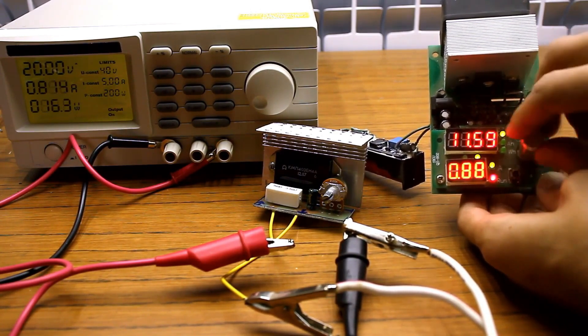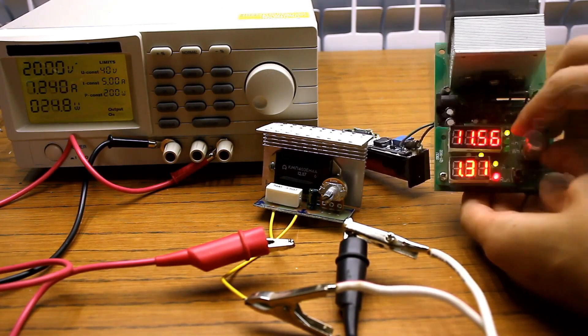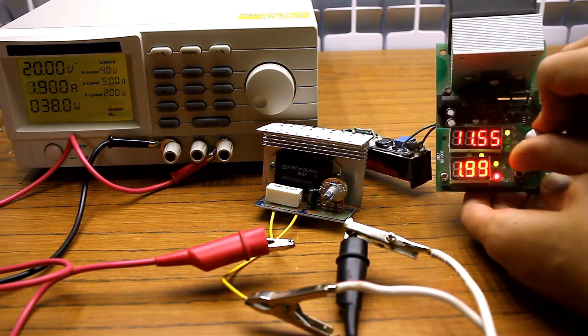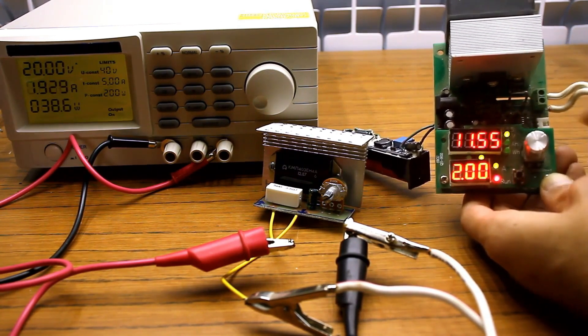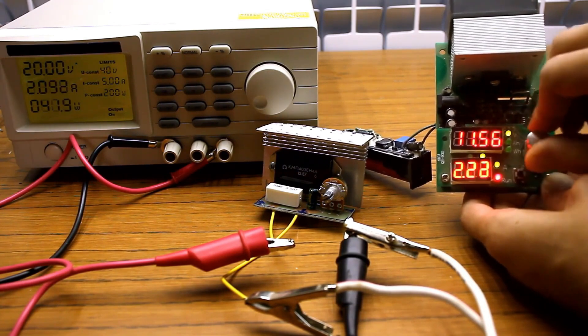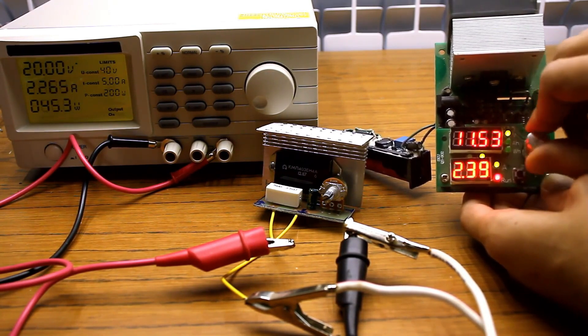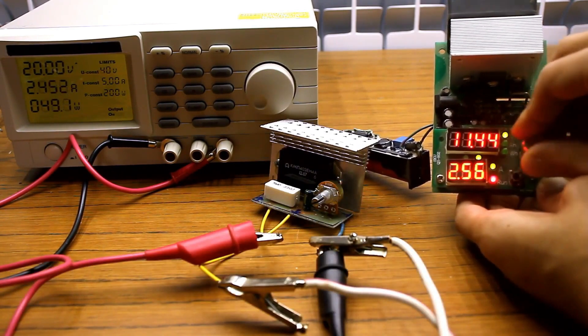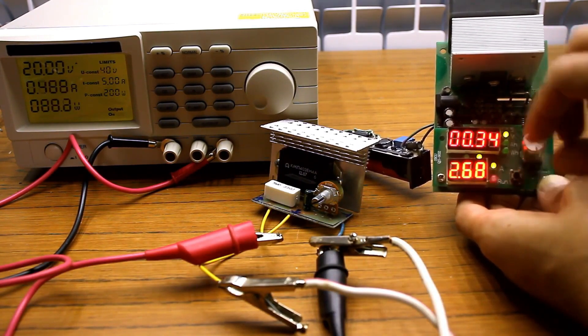We will apply 20 volts to the input and slowly load the output of the stabilizer. At a current of 1 ampere, everything is fine. At a current of 1.5 amps, everything is not bad either. At 2A, in principle, it's the same, the stabilizer holds the current. There are voltage drops, but they are insignificant. When trying to draw more, the output voltage starts to drop sharply, and then the protection kicks in.